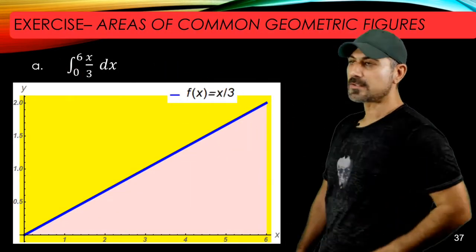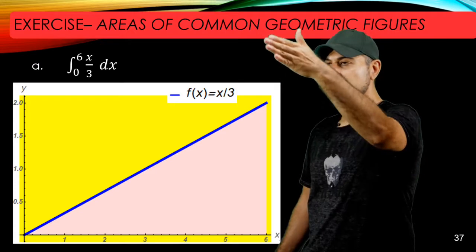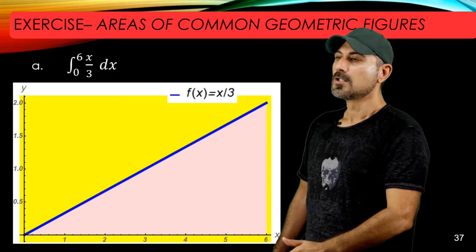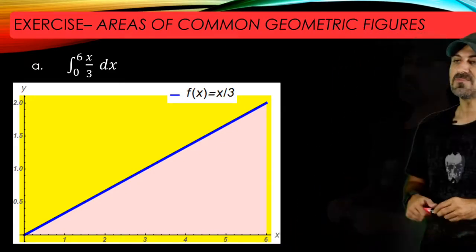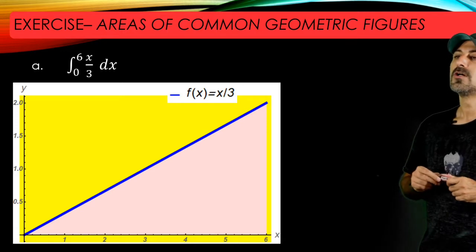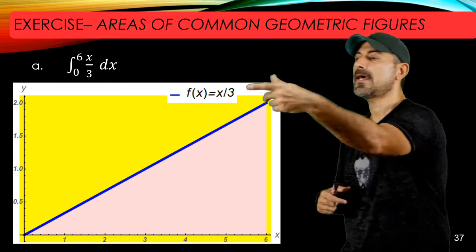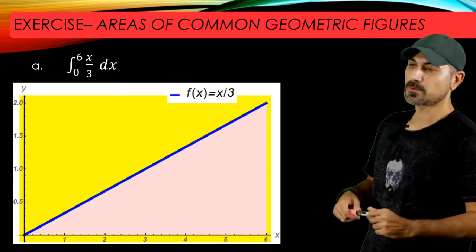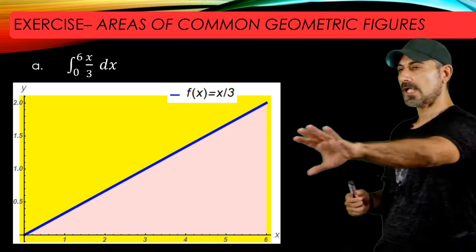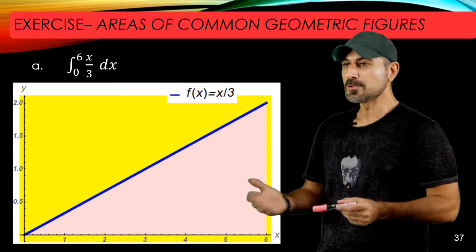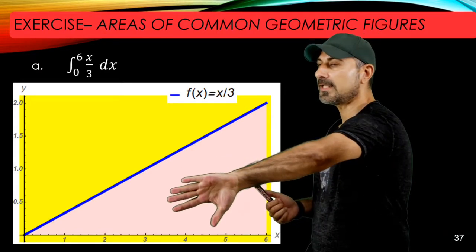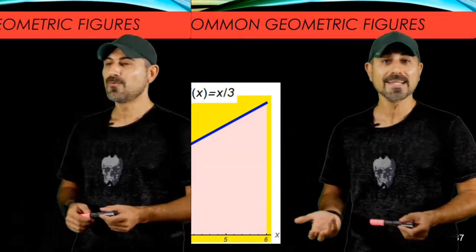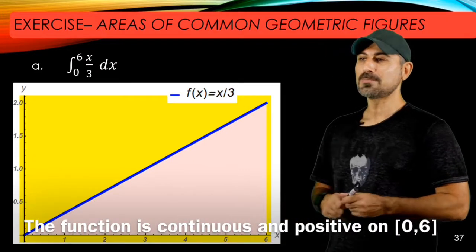And the upper limit is six, so x equals six is this vertical line here. So the area bounded between four functions—f, the x-axis, the y-axis, and x equals six vertical line—is this shaded region here. And you can easily observe that the shaded region is a right triangle.